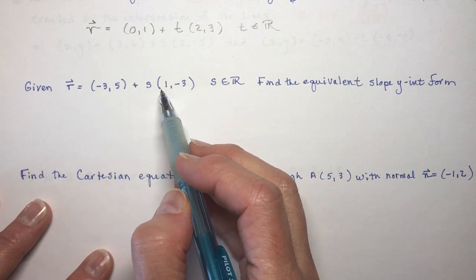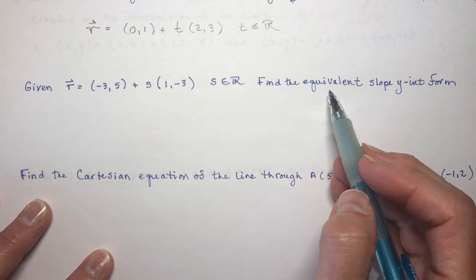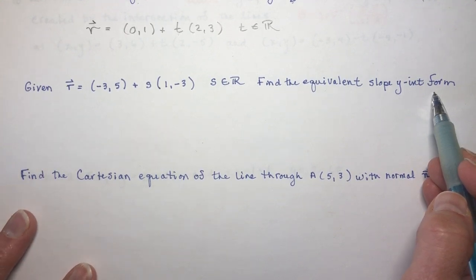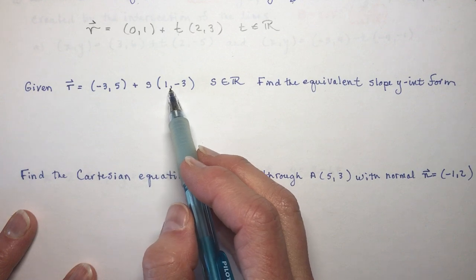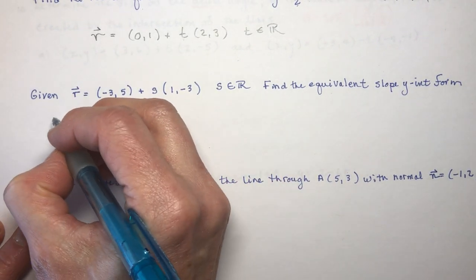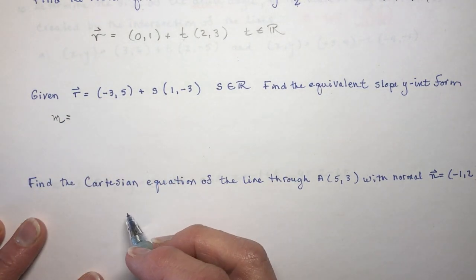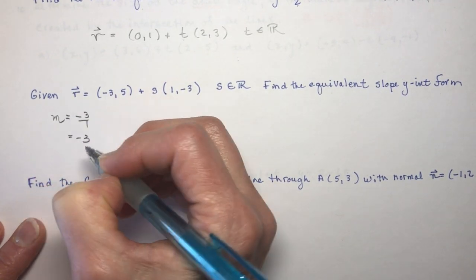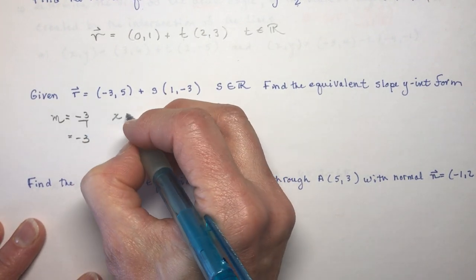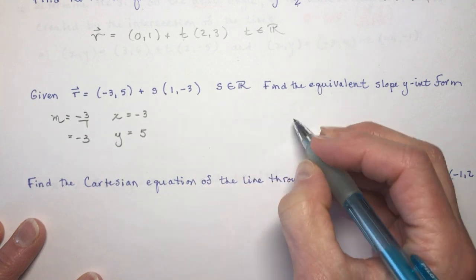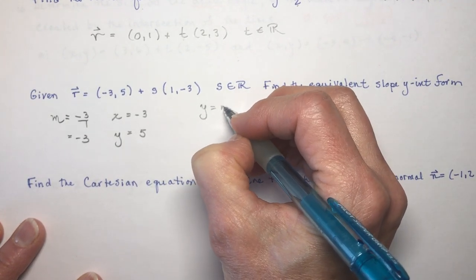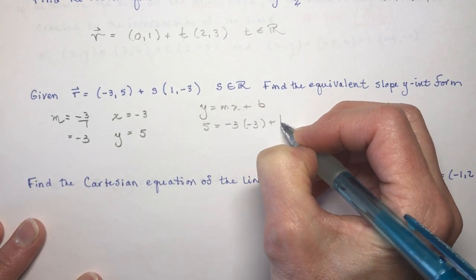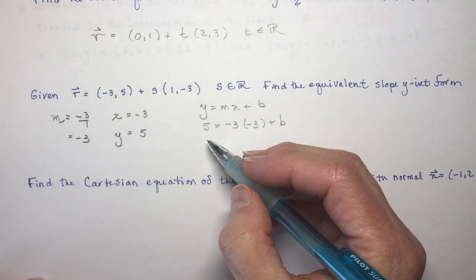Given the vector equation r equals (-3, 5) plus s times (1, -3), s is an element of real numbers — find the equivalent slope y-intercept form. The slope is rise over run: minus 3 over 1, so m equals minus 3. Using the point (-3, 5): plug into y equals mx plus b, so 5 equals minus 3 times minus 3 plus b, giving 5 equals 9 plus b, so b equals minus 4.